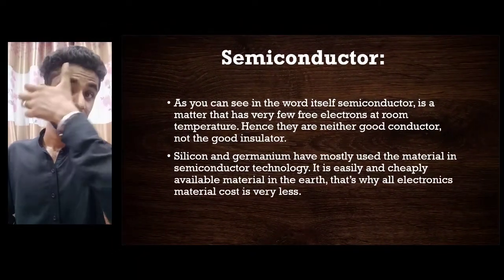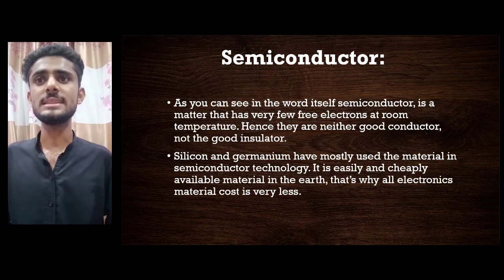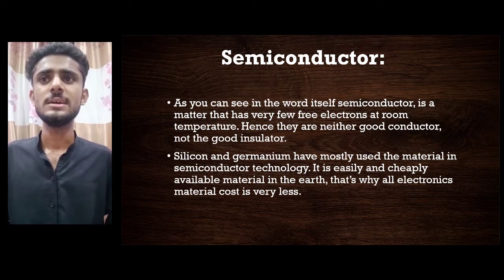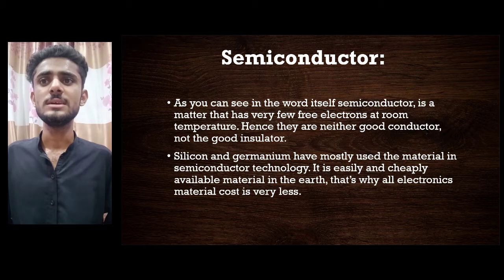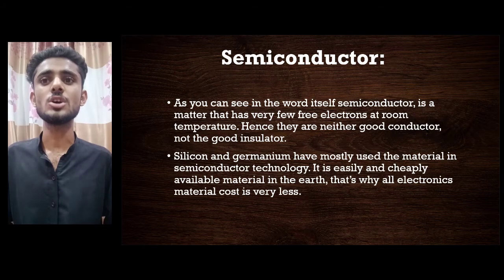Semiconductor: as the word implies, a semiconductor is a material that has very few free electrons at room temperature. Hence, they are neither good conductors nor good insulators. Silicon and germanium are the most commonly used materials in semiconductor technology. They are easily and cheaply available, which is why all electronics made from these materials have a very low cost.